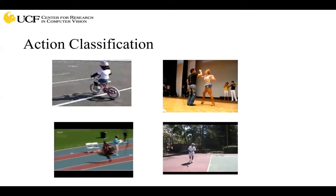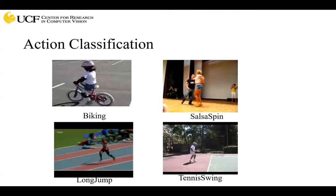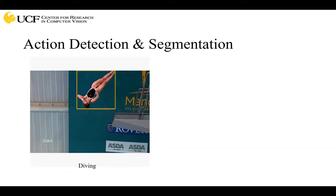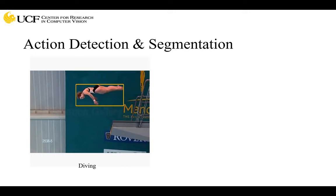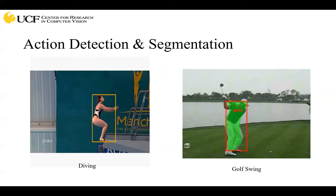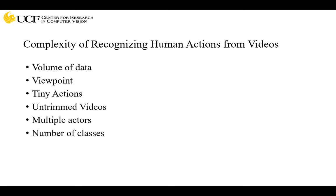Given these kinds of videos, we want to classify them into different classes like biking, salsa, spin, tennis swing, and long jump. The second problem is that given a video, not only do we want to say it's a diving, but we want to put a bounding box on the actor. The third problem is action segmentation or detection, where we want to do pixel-wide segmentation and also say this is a golf swing.